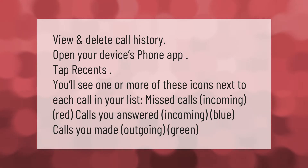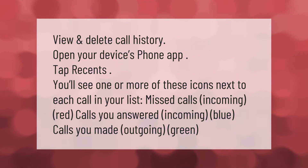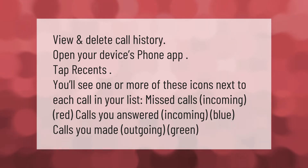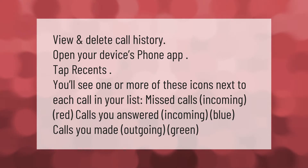To view and delete call history, open your device's phone app and tap Recents. You'll see one or more of these icons next to each call in your list: missed calls shown as incoming red, calls you answered as incoming blue, and calls you made as outgoing green.